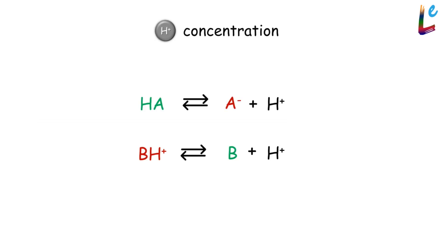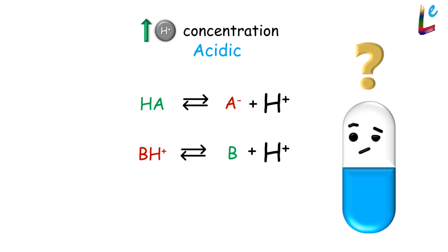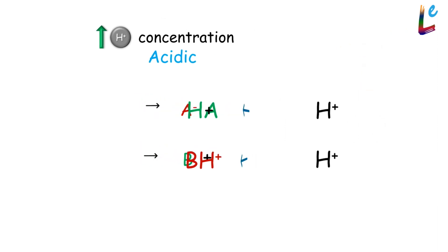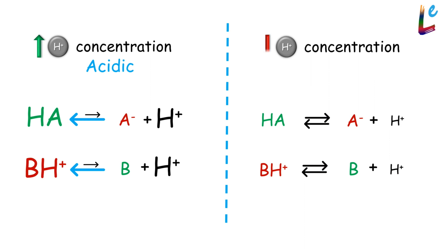Take a look at this equilibrium. If the hydrogen ion concentration increases — that is, if the medium becomes acidic — in what direction will the equilibrium shift? To the left. What if the hydrogen ion concentration decreases, that is, when the medium is basic, the equilibrium shifts to the right.